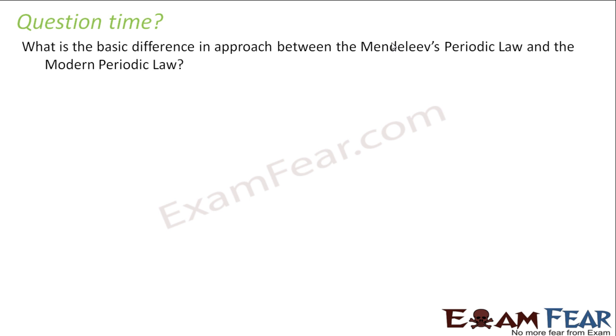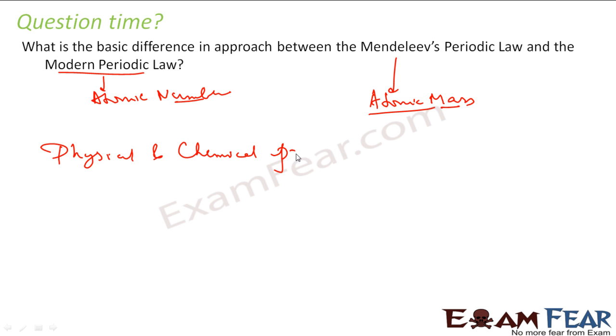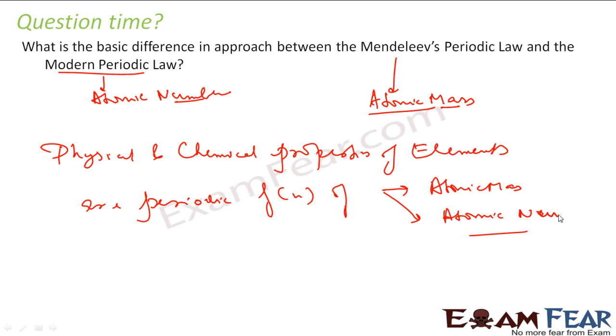What is the basic difference in the Mendeleev periodic law and the modern periodic law? So, Mendeleev periodic table law was based on atomic mass, because that time the protons, electrons, neutrons were not discovered, they didn't know what is atomic number. But the modern periodic table is based on atomic number, because by this time the protons, electrons, neutrons were discovered and they knew what atomic number is. So, the law is same, both says that physical and chemical properties of elements are periodic function. In case of Mendeleev law, he told atomic mass and for modern periodic law it says atomic number. That is all. So, everything is same, but instead of atomic mass they use atomic number.